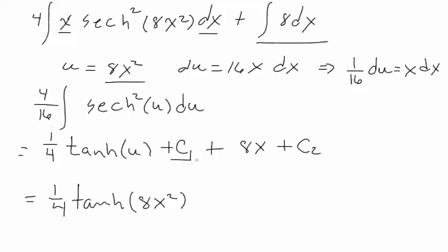So we have 1 fourth tan hyperbolic. What was u equal to? It was equal to the 8x squared. Now we can combine both these constants. If you add constant 1 plus constant 2, we just get another constant. We'll just combine them and call it big C there. So it looks good. Everybody remember this. 1 fourth hyperbolic tan 8x squared plus 8x plus c.